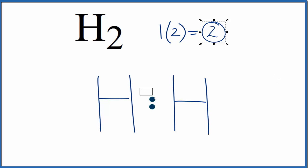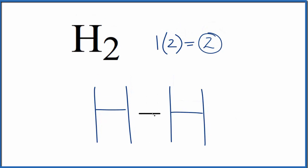We could replace this pair of electrons here with a line. And this line right here, this would represent a single bond, a pair of electrons shared between the hydrogens.